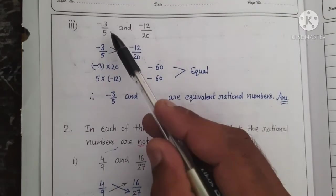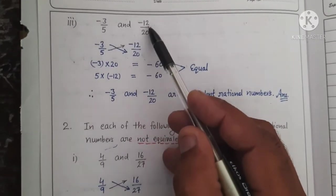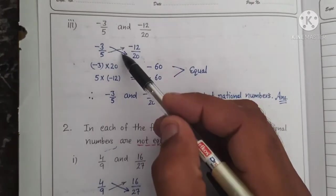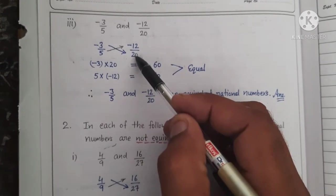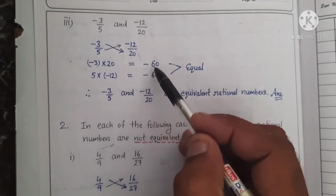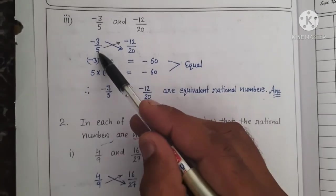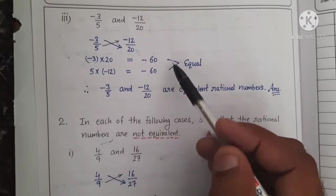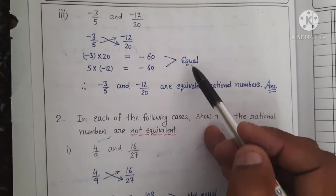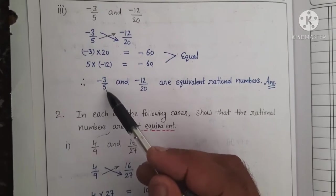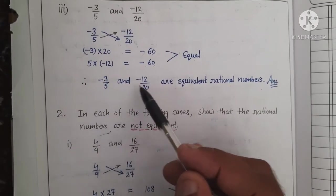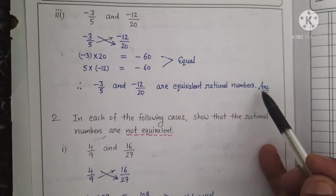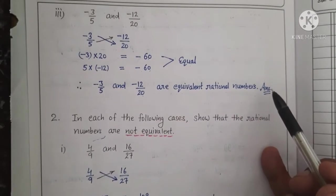Part three: minus 3 upon 5 and minus 12 upon 20. Cross product karenge. Minus 3 ko 20 se karenge — answer is minus 60. Similarly, 5 ko minus 12 se karenge — again, answer is minus 60. Both values are equal. Therefore, minus 3 upon 5 and minus 12 upon 20 are equivalent rational numbers. That is our required answer.